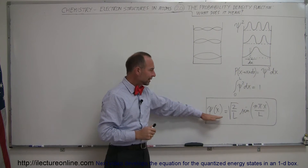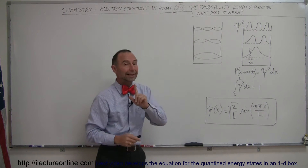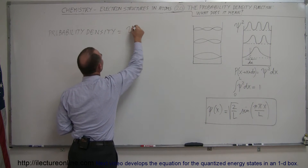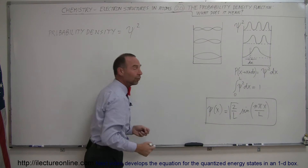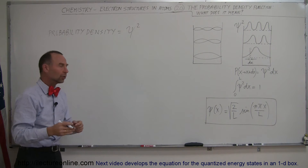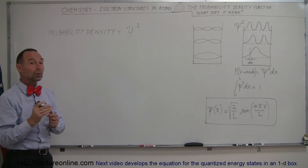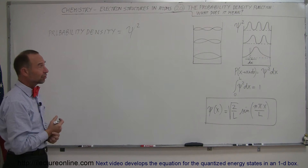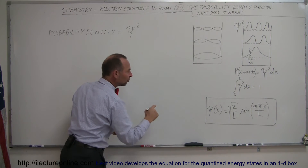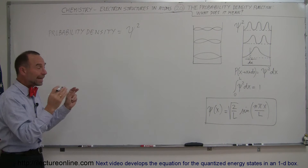We realize that if we take the wave function of the electron in a box and square it, we get what we call the probability density. So the probability density is equal to the wave function squared. We take the wave function — the function that describes the movement of the electron in a confined space, just as we'll later apply to the confined space of a hydrogen atom — and squaring it gives us the probability density function, which describes where you're most likely to find the electron in that confined space.